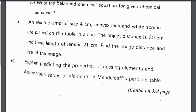Fifth question: an electric lamp of size 4 centimeters, a convex lens, and a white screen are placed on a table in a line. The object distance is 30 centimeters and the focal length of the lens is 21 centimeters. Find the image distance and the size of the image.